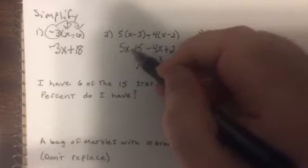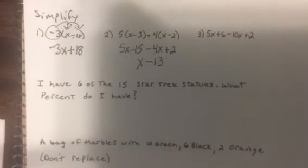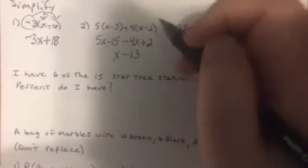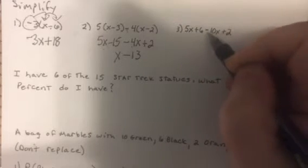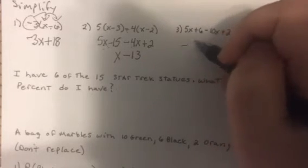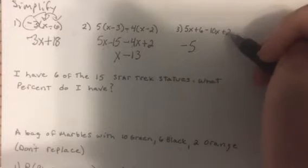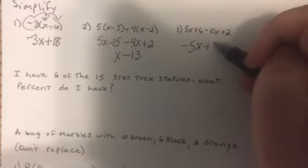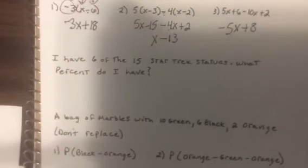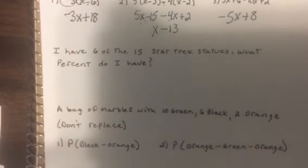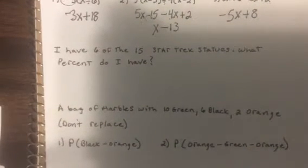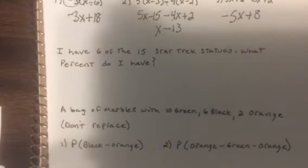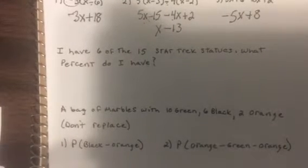When one's positive and one's negative you subtract and keep the sign of the bigger one, so 15 is bigger. This one we combine 5x minus 10x is minus 5x, and 6 plus 2 is 8. We'll probably have one or two percent problems.